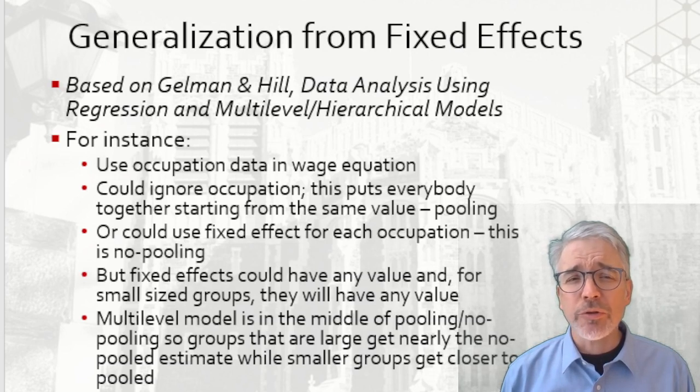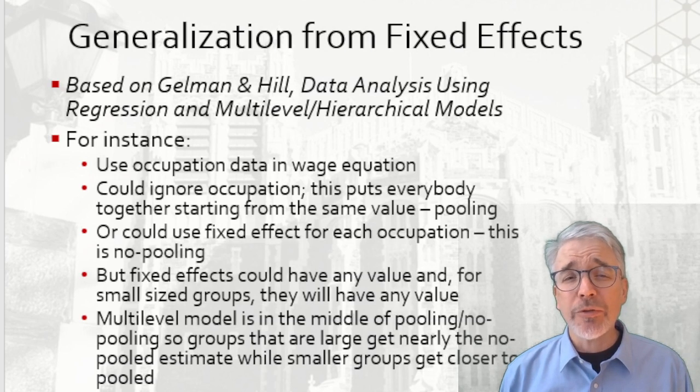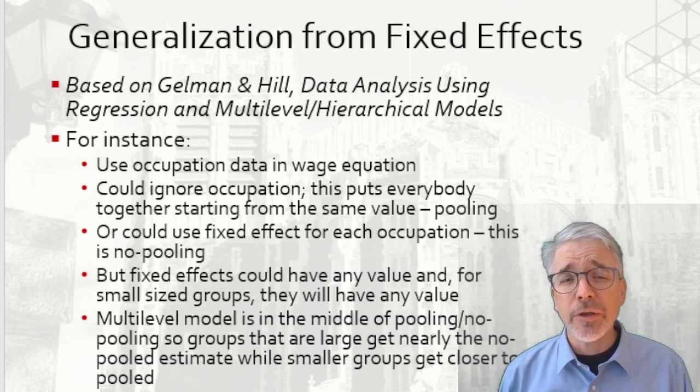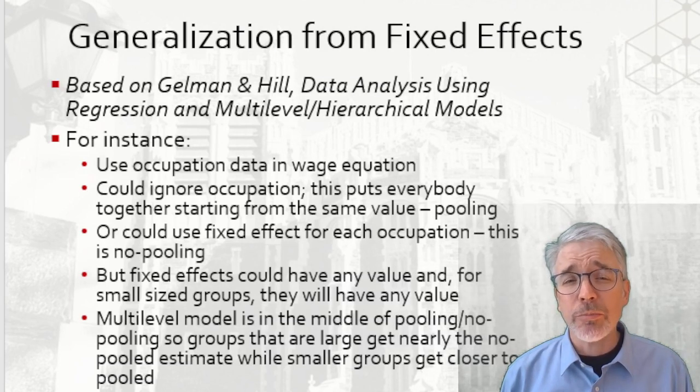We might want to give a little more structure to the problem to model that we expect to use the overall pooling estimate for sort of the grand average. But as we get more observations, then we will gradually shift the estimation. And that's just what multilevel modeling is doing. Groups that are really large get nearly the fixed effect estimate, while smaller groups get weighted toward the pooled value of the overall average.